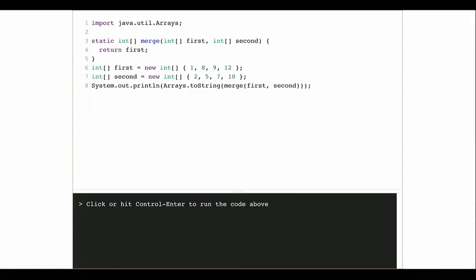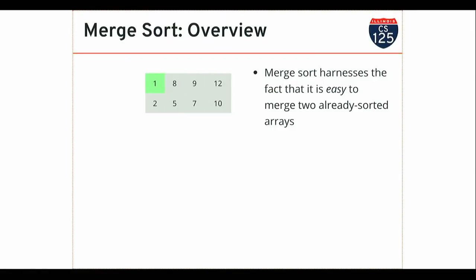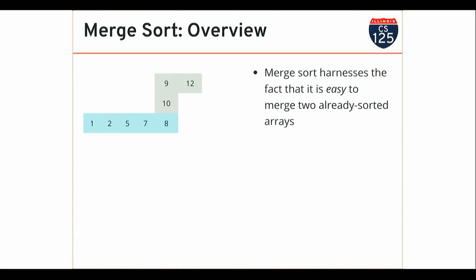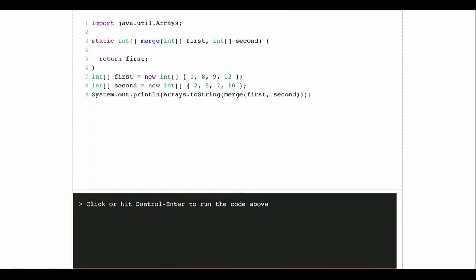What is the runtime of this merging algorithm? Merging two sorted arrays together is O(N) — it takes about n comparisons to combine them, where n is the total number of elements.